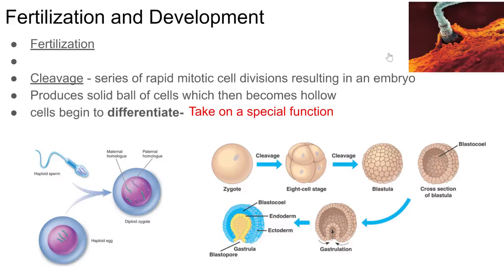Thinking about where we've been in our notes: we started with cells, how cells reproduce, cell division, mitosis, then meiosis. We talked about the human reproductive systems — the organs and structures present in humans that allow for reproduction. We covered male reproductive organs and female reproductive organs.